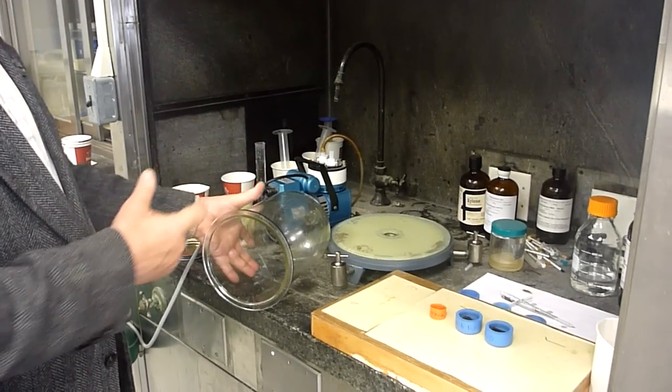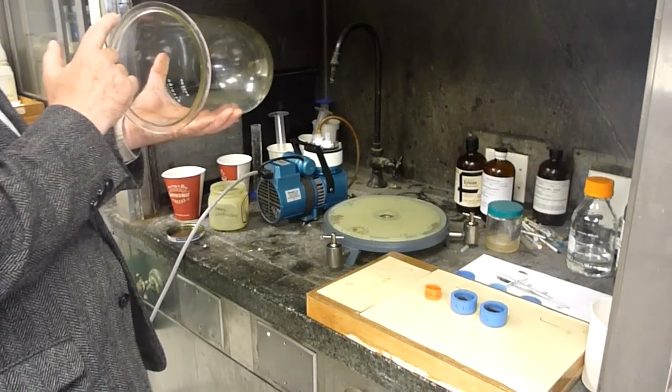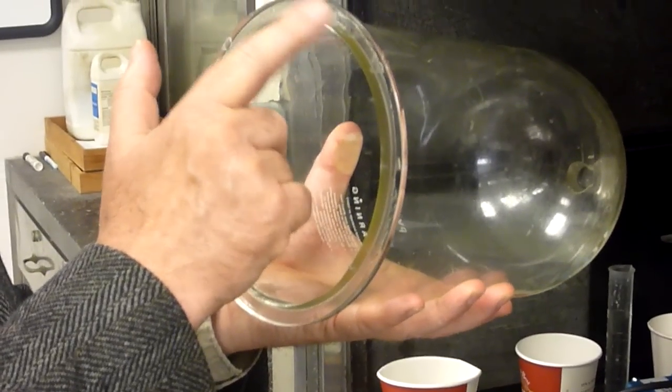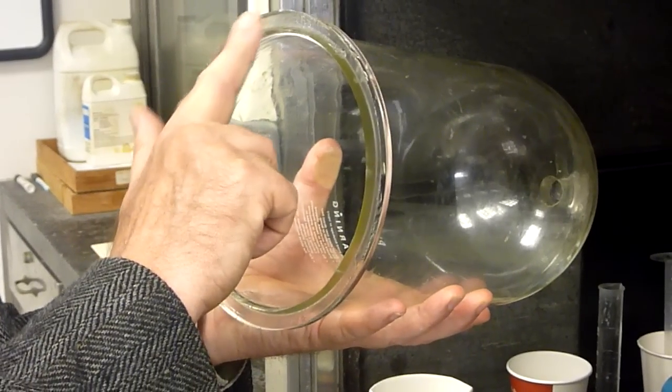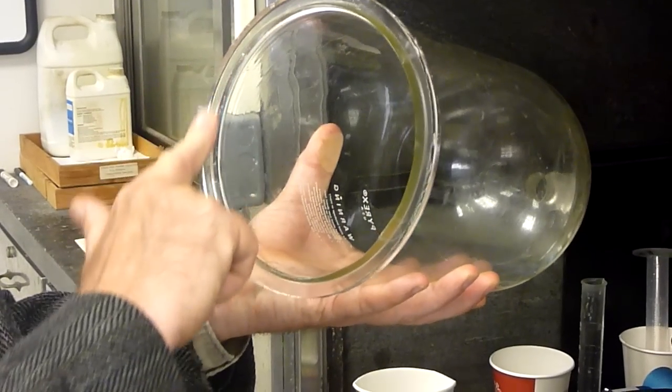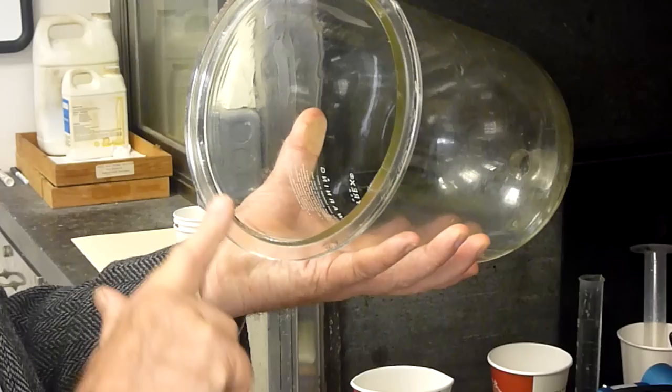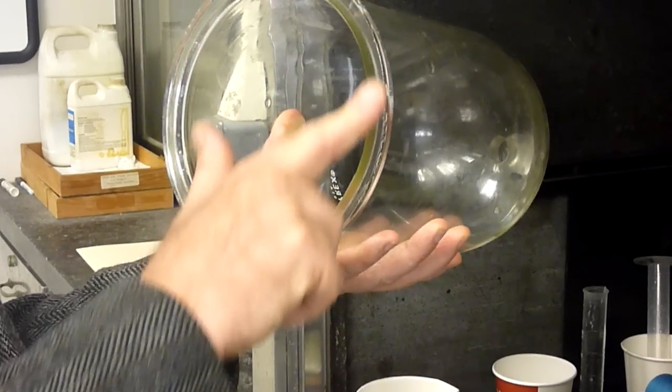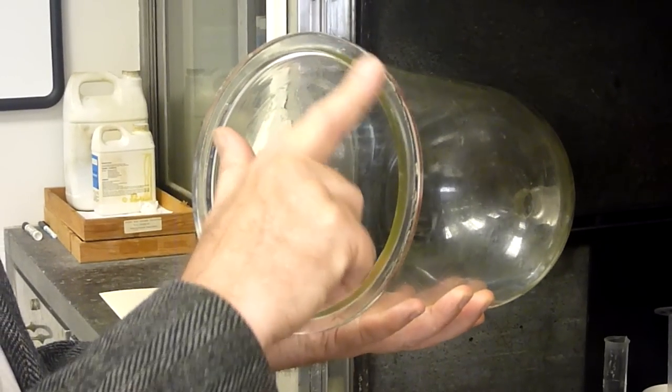...but you kind of dab it first in a few spots, and then kind of spread it around so that it fairly evenly covers this rim.